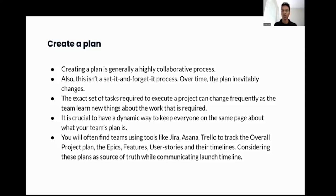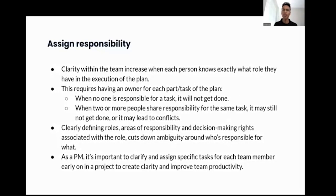Now that you have defined the mission and created a plan, the next step in creating clarity is assigning responsibility. Clarity within the team increases when each person knows exactly what role they have in execution of the plan. This requires having an owner for each task — when no one is responsible for a task, it will not get done, and when two or more people share responsibility for the same task, it may still not get done or may lead to conflicts. Clearly defining roles, areas of responsibility, and decision-making rights cuts down ambiguity and increases clarity around who is responsible for what. As a PM, it's important to clarify and assign specific tasks for each team member early on in the project to create clarity and improve team productivity.